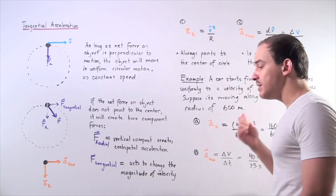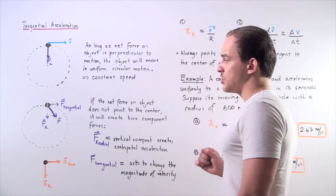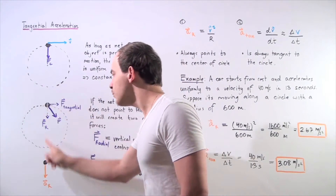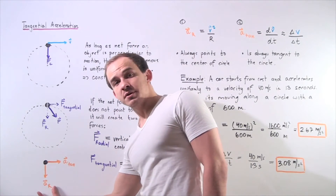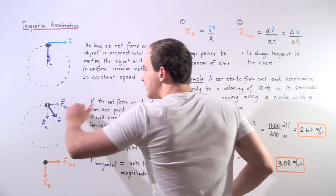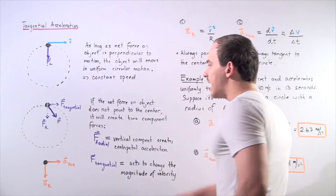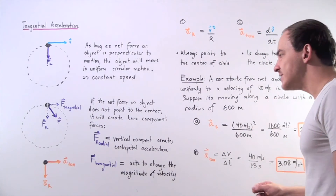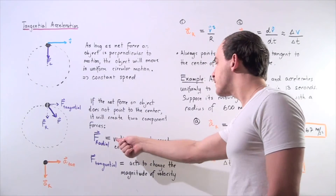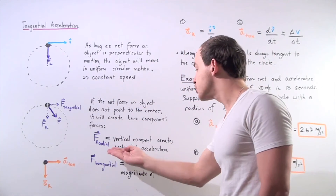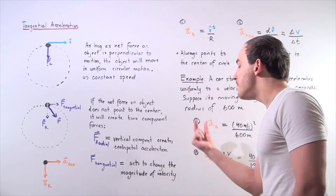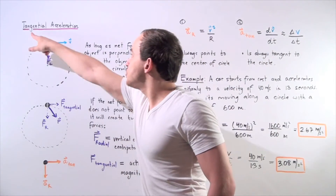Our speed will no longer be constant. Not only will the magnitude of velocity change, but the direction will change too. We're going to have an acceleration pointing inward toward the center of the circle — that's called radial or centripetal acceleration — and we're also going to have a tangential acceleration because we have a force acting tangent to the pathway. If the net force on the object does not point to the center, it creates two component forces: the radial force, which creates centripetal acceleration, and the tangential force, which acts to change the magnitude of velocity and creates the tangential acceleration.